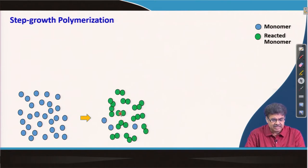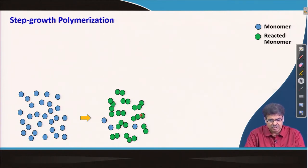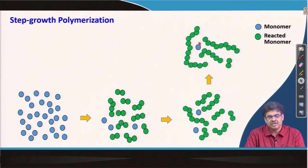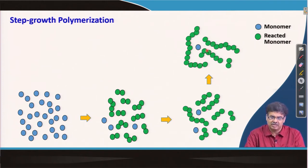We form dimers; a dimer reacting with another monomer gives a trimer; a trimer reacting with a dimer gives a pentamer; a trimer with a monomer gives a tetramer, and so on. With time, these oligomeric chains get longer and longer, but you always have some monomers or dimers remaining in the polymerization medium. The average molecular weight goes up with time, and we can stop the reaction whenever we want.